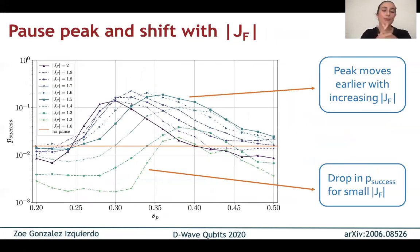So in the previous plot, JF was fixed, and we changed the pause location. And then in the one before, we didn't have a pause, and we changed J Ferro. But what happens if we change both J Ferro and the pause location? Well, it will look something like this. This plot is for a single instance. However, it also looks very similar for an ensemble. It's just more clear to see this way.